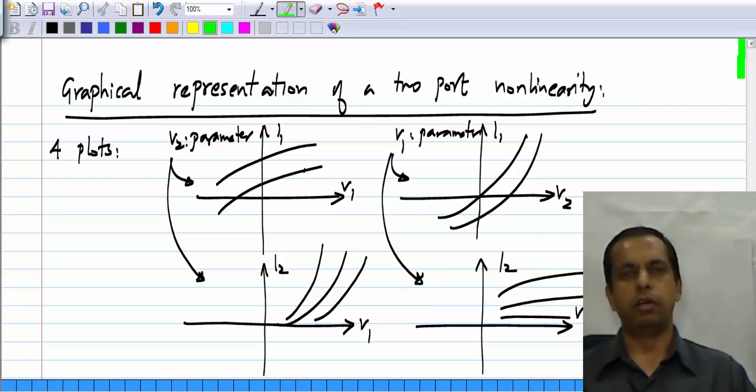When you have a nonlinear two port embedded in a circuit, you have to write the circuit equations, and you will have nonlinear equations, because of the nonlinear nature of the two port. And then you have to solve the nonlinear equation numerically. This is what we will have to do in order to solve for the operating point. Right now, we have not considered any specific nonlinearity, but a general one in the form of F1 and F2.